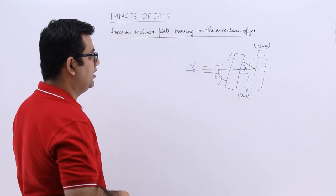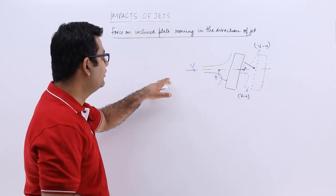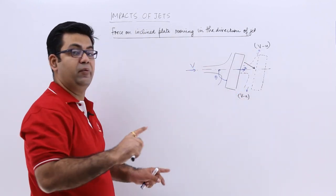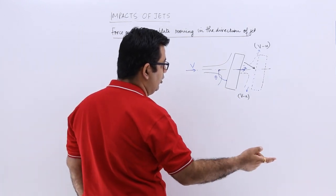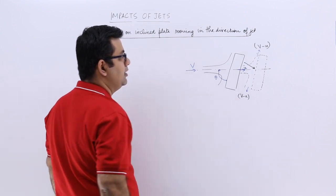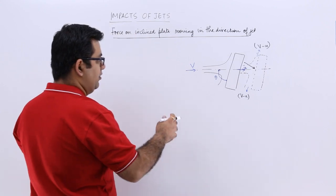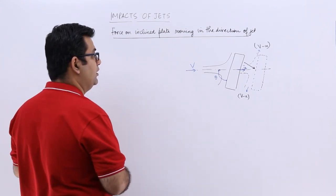So this is what you have. The plate is moving with velocity u, the jet is moving with velocity v, so you will have a velocity in between them, or the velocity of jet with respect to the plate is v minus u. Because there is a comparative motion between the two, there is nothing absolute between them.